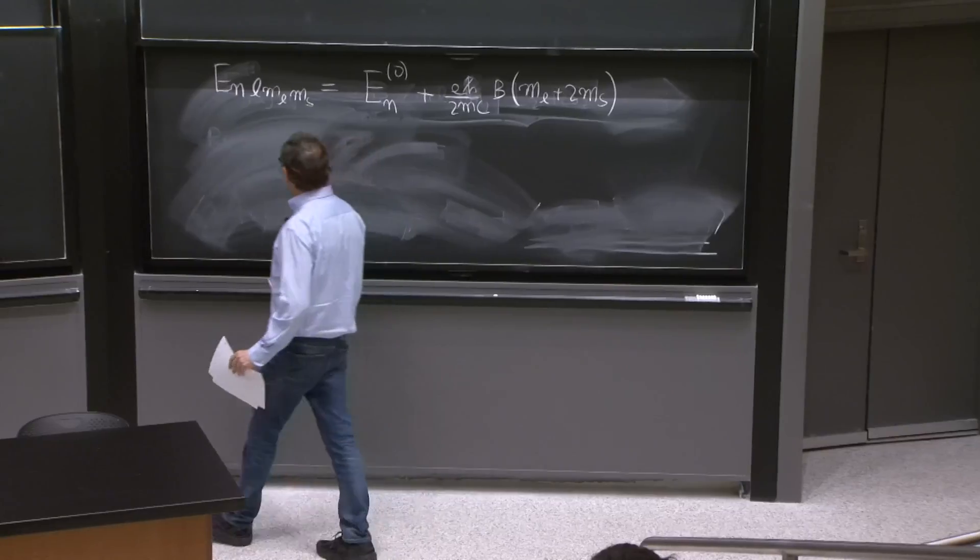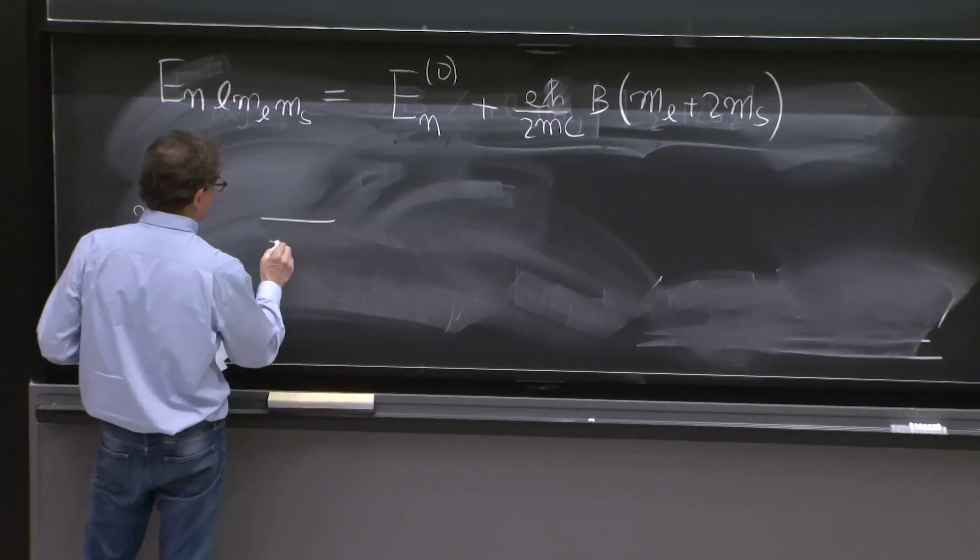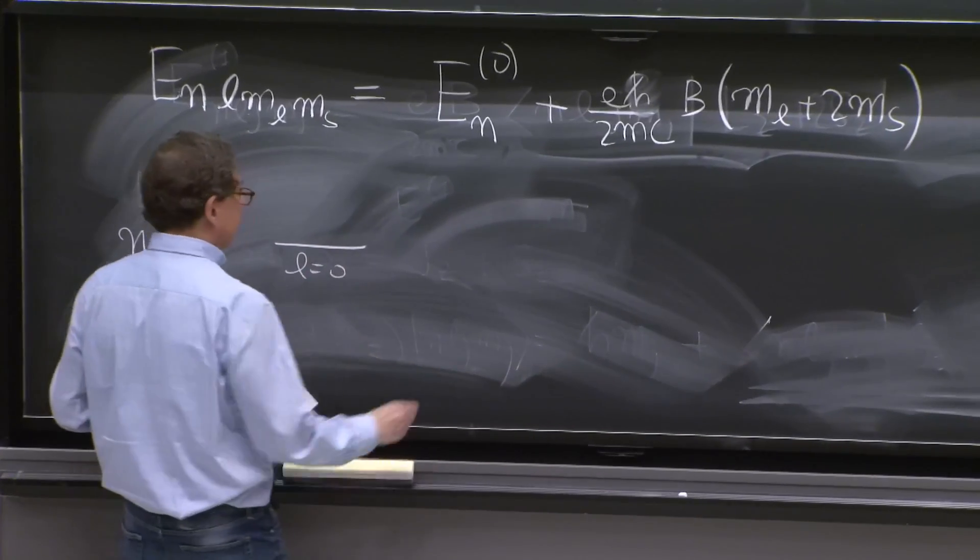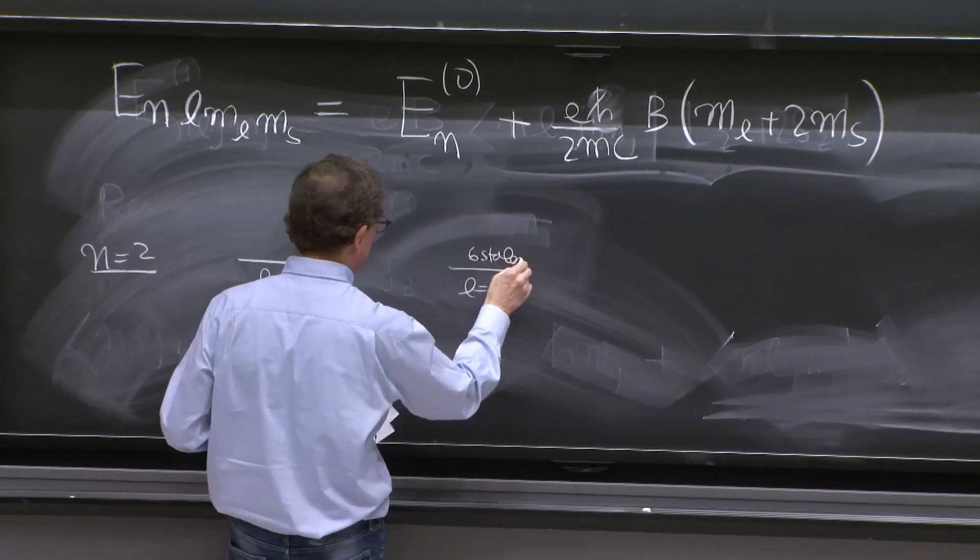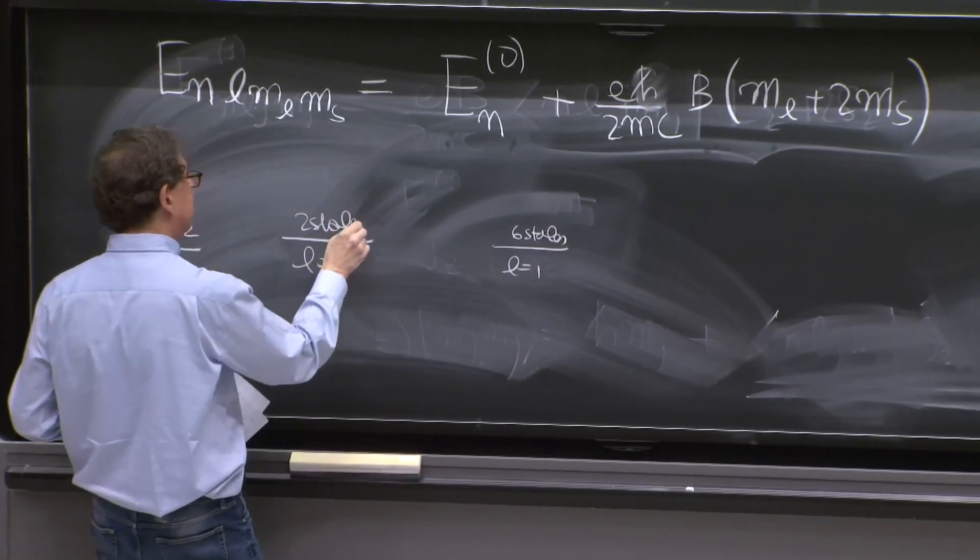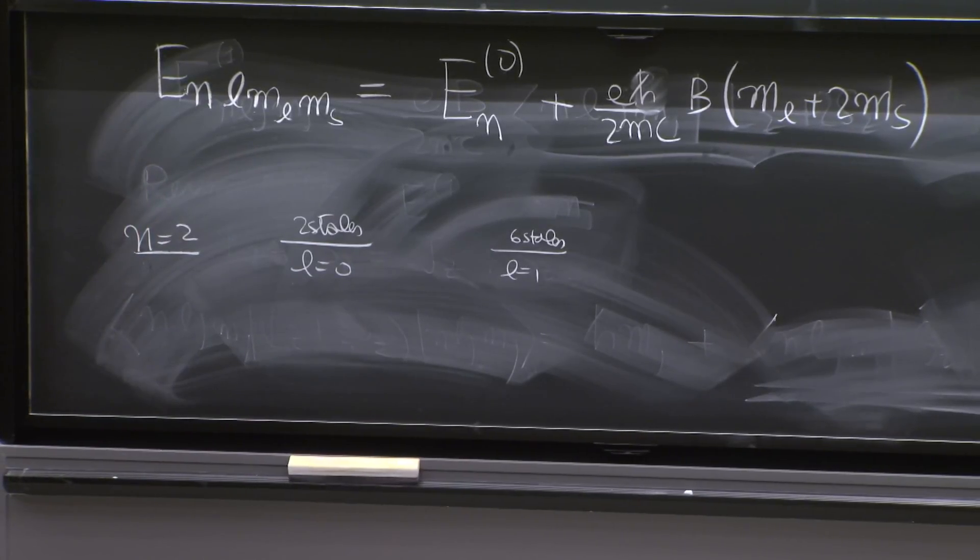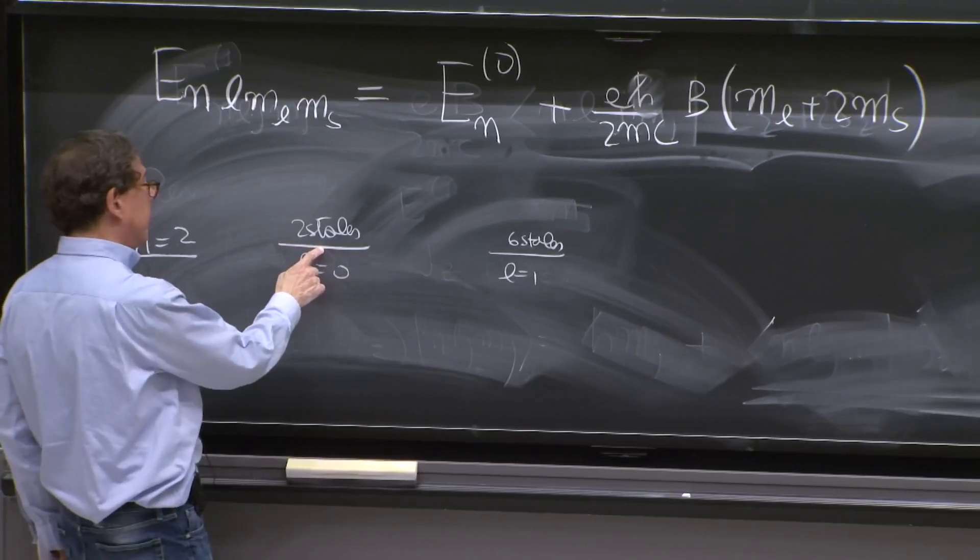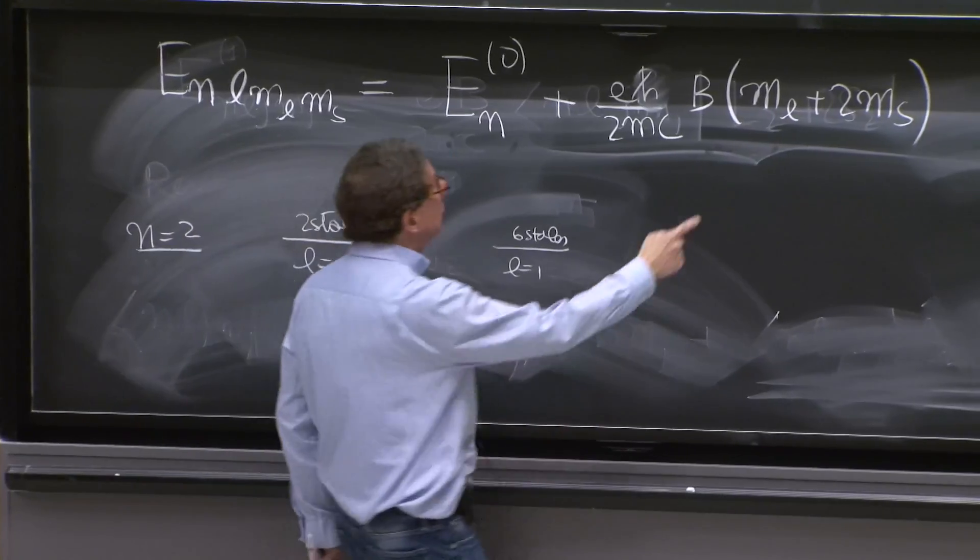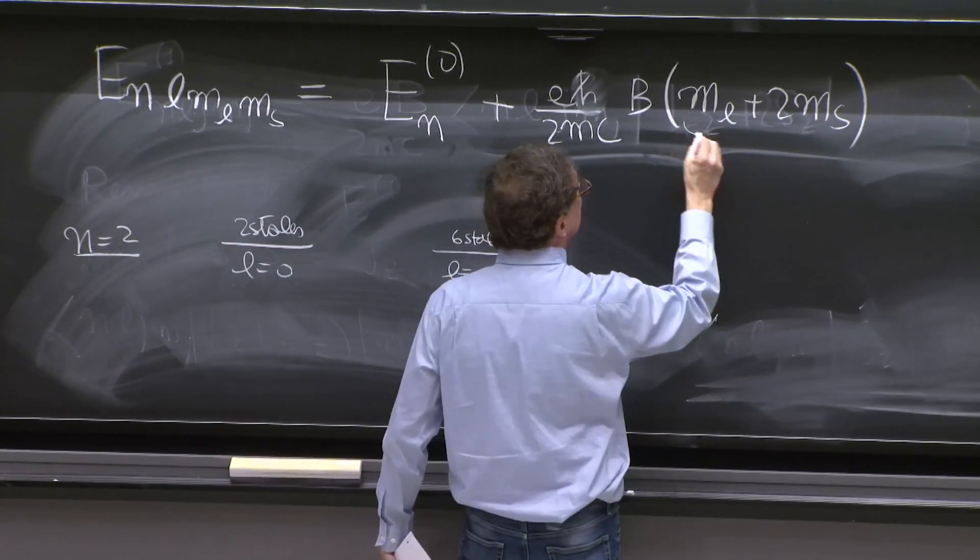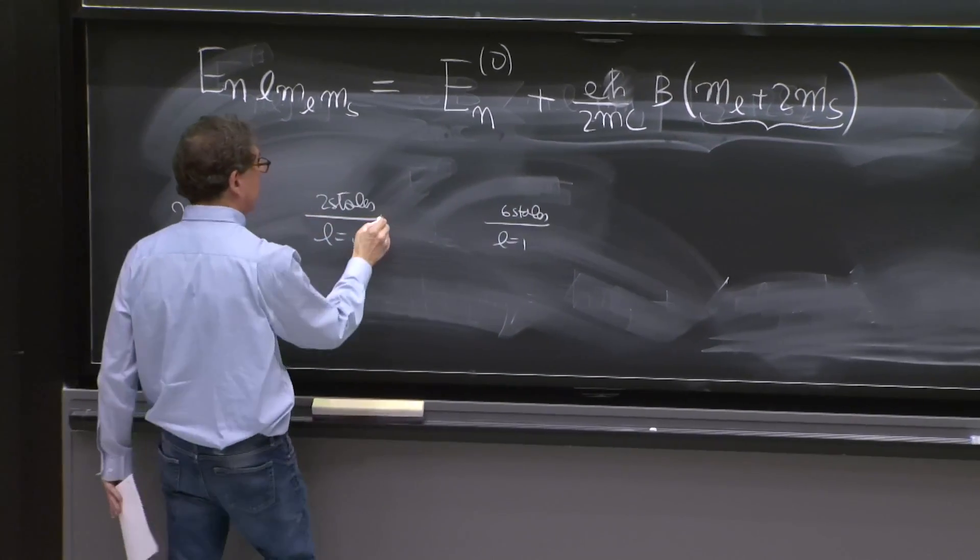So look at the n equal 2 states. You have l equals 0 and l equals 1. Here you have six states. Remember, there's spin. There's two states here. The two states of l equals 0 have ms equal 1 half and ms equal to minus 1 half. So they're going to split.